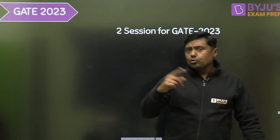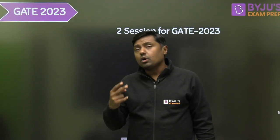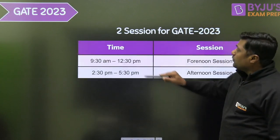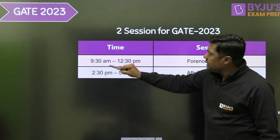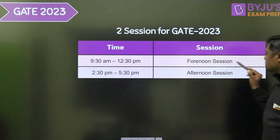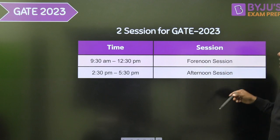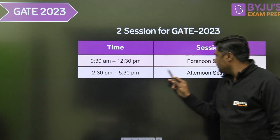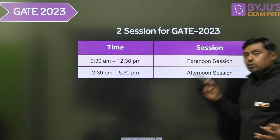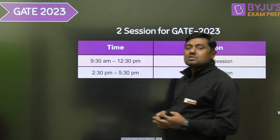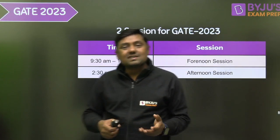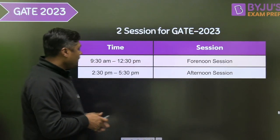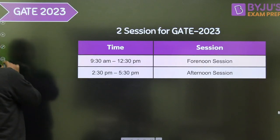As you know, we have two sessions for GATE 2023. The first one is from 9:30 AM to 12:30 PM, which is the forenoon session. The second is from 2:30 PM to 5:30 PM, which is called the afternoon session. Please mention your session during the exam in the comments box. I will give one timetable for each session.